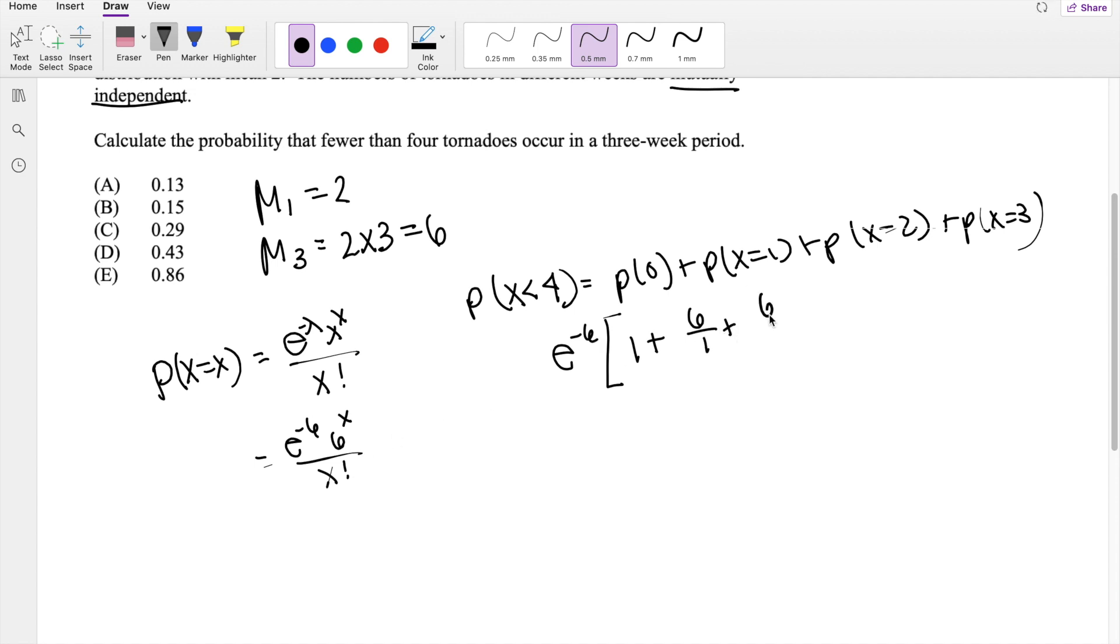When I plug in 2 for x, you get 6 to the second power over 2 factorial, which is just 2. And lastly, you get 6 to the cubed over 3 factorial, which is 6. So I'm going to plug this into my calculator real quick. This is approximately equal to 0.1512, our answer B.